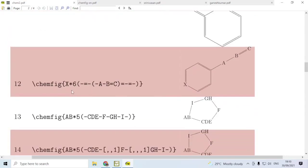Now, consider line 12. You have a 6-sided ring, X*6, and then here we specify the bonds. Then at this position we have an attachment like this, specified by single bond A, single bond B, and then double bond C. You have this attachment.